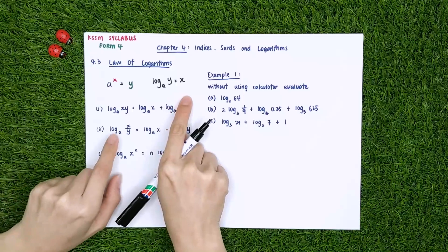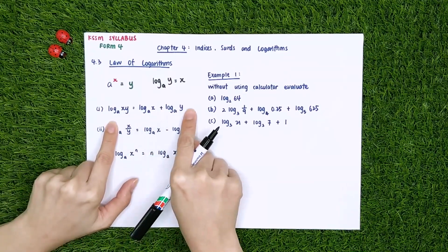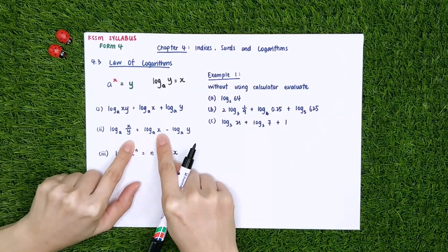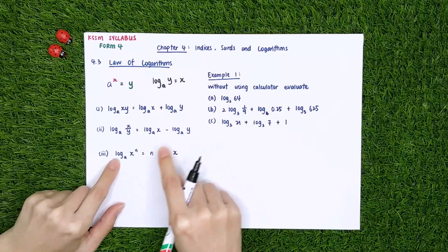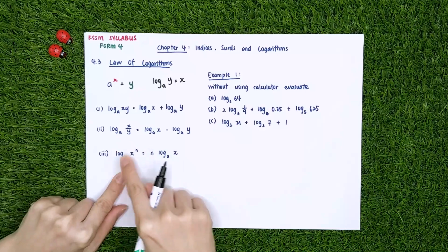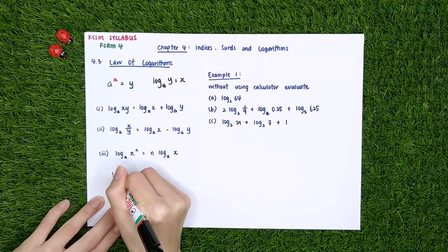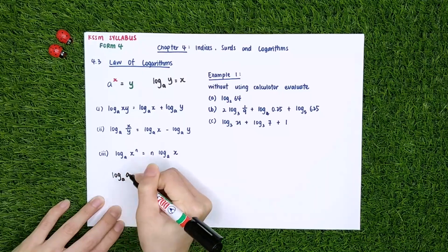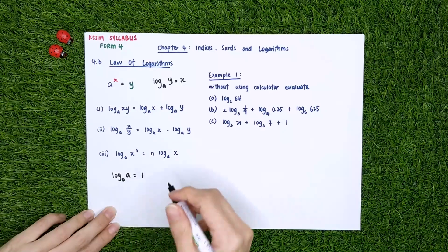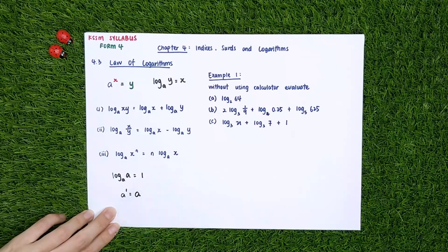There are three laws of logarithm. First, log_a(xy) equals log_a(x) plus log_a(y). Second, log_a(x/y) equals log_a(x) minus log_a(y). Third, log_a(x^n): move the n to the front. Also, log_a(a) equals 1. In index form, a power of 1 equals a.